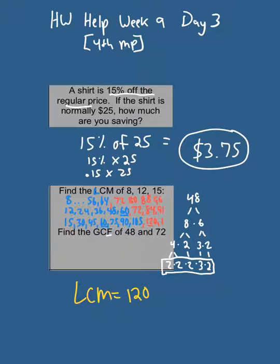Now I'm going to do 72. So 72, I know 8 times 9 is 72. So 8 is 4 times 2, and 9 is 3 times 3. 4 can be split up into 2 times 2, and I'm going to bring down this 2, this 3, and this 3.